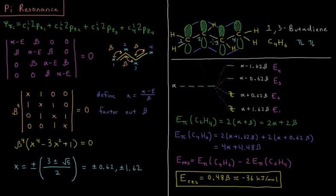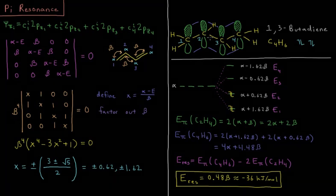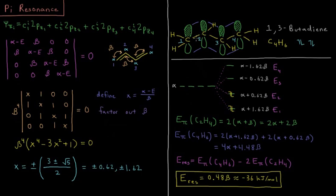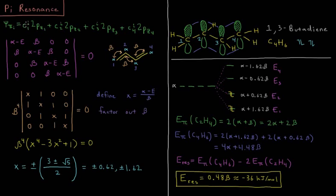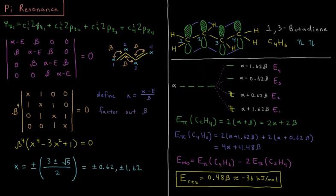I want to use Huckel theory to predict the energies of this type of molecule, the energies of the pi system, and how that differs from just having a single isolated pi bond. In the linear variational method, my wave function is a linear combination of all the orbitals that I'm putting in here.